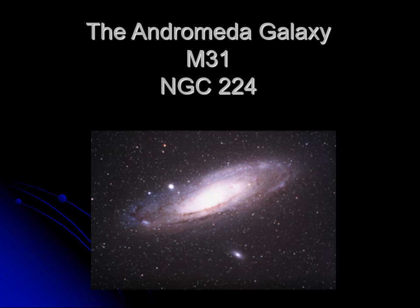Not long after, astronomers realized that naming objects this way was running out of steam. Many objects have multiple names, just like stars do. For example, the Andromeda Galaxy is also known as Messier 31 or M31, and also as NGC 224, along with several other catalog designations.